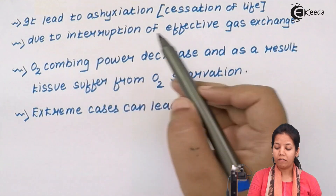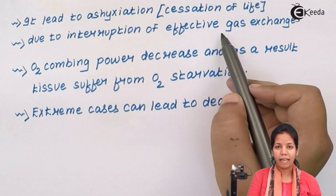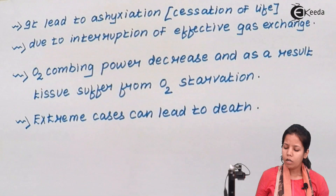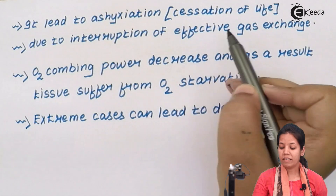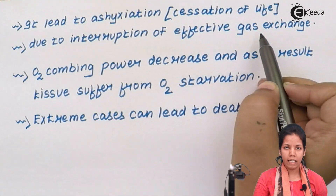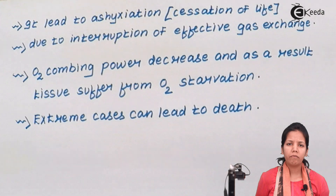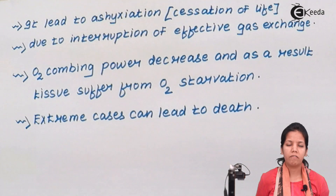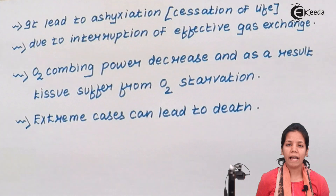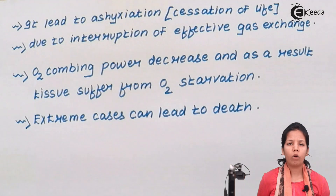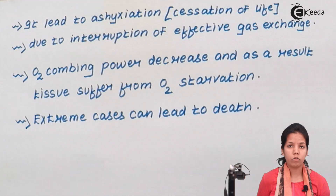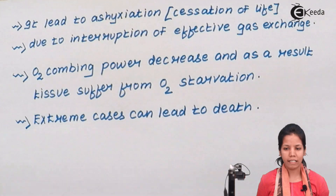This happens due to the interruption of effective gaseous exchange. When there is no effective gaseous exchange — meaning oxygen is not transferred via hemoglobin to different organs of your body and Hb combines with CO instead — then all organs of your body would lack oxygen. Without oxygen, obviously all the organs of your body would give up and eventually die.